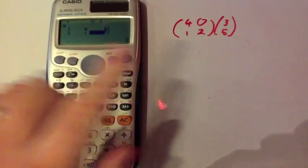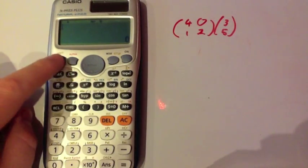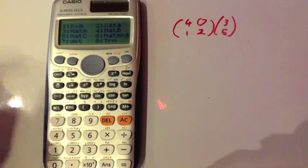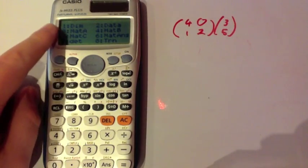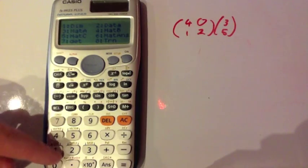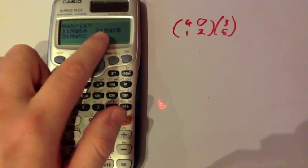So we've inputted matrix A, now we're going to input matrix B. Press the AC button and press shift and then 4 again, the matrix. Let's go into the matrix area. We're going to input data again, D-I-M, so number 1. It'll ask us which matrix we're going to put it in. Let's put it as matrix B, so number 2.